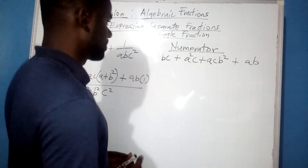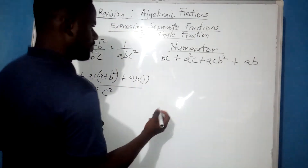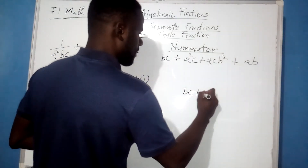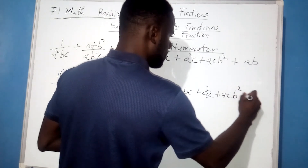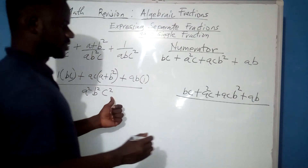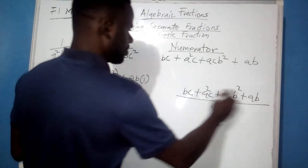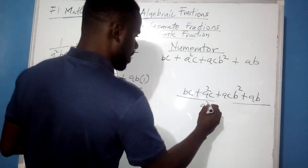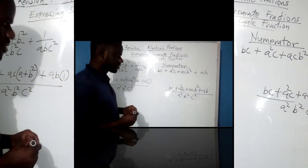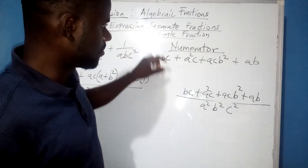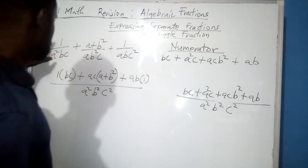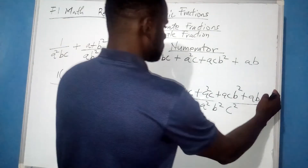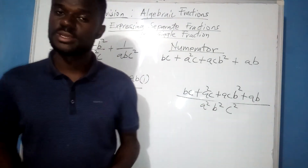Once we have already solved the numerator, we simply combine it with the denominator. The whole answer will be BC plus A squared C plus ACB squared plus AB, all over A squared B squared C squared. Take note that in the numerator there are no like terms, which is why we cannot simplify it further. We were expressing this entire fraction to form one single algebraic fraction.